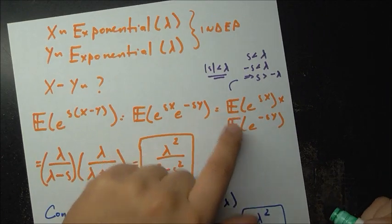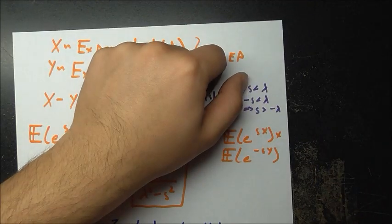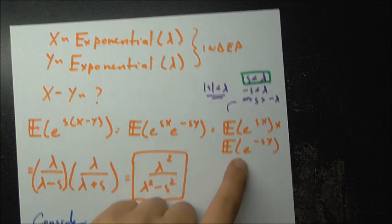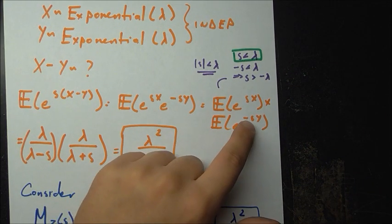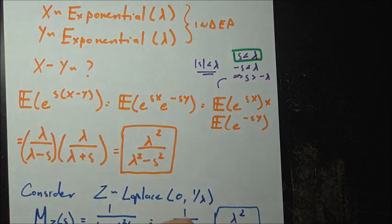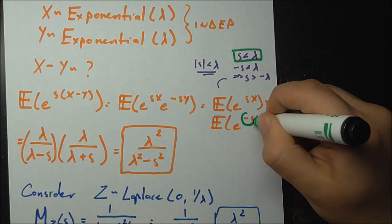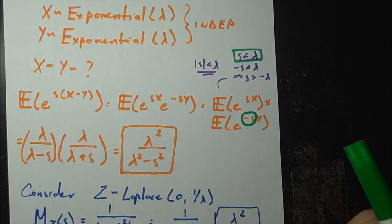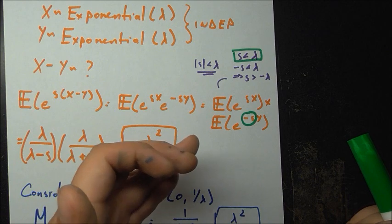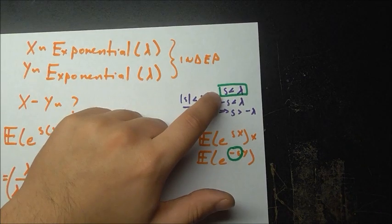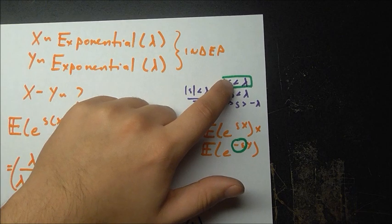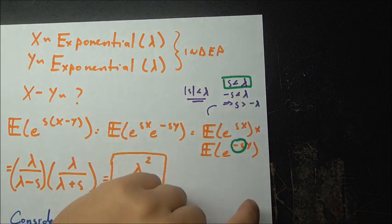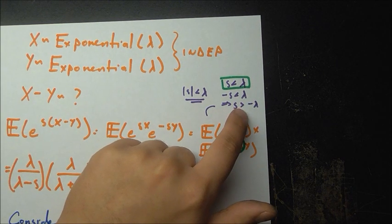The first factor requires s less than lambda. For the second factor, we use the exponential MGF with negative s substituted in, giving lambda over lambda minus (minus s), which is lambda over lambda plus s. For this to converge, the condition becomes negative s must be less than lambda, which means s must be greater than negative lambda. So we have two conditions: s less than lambda and s greater than negative lambda.